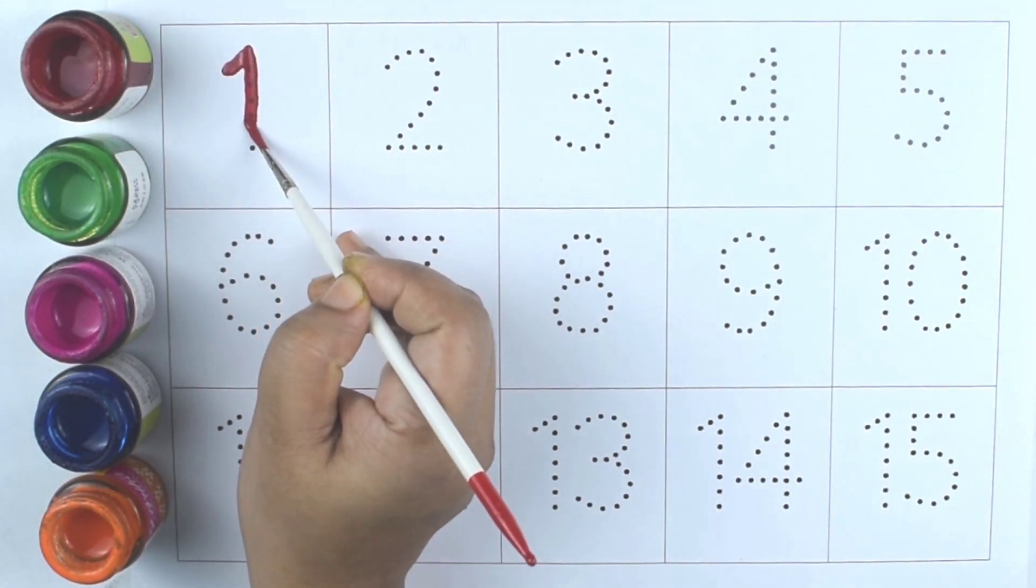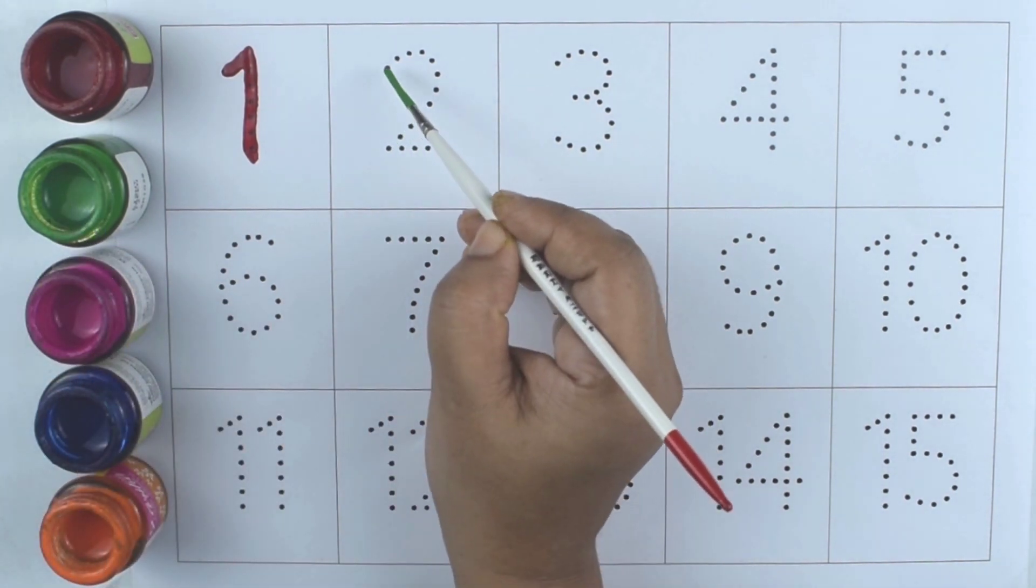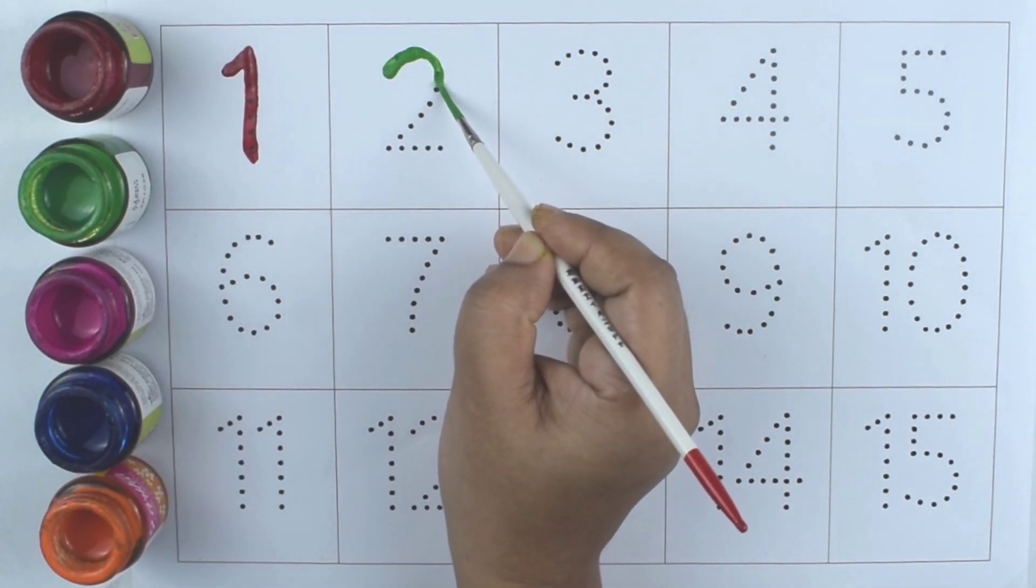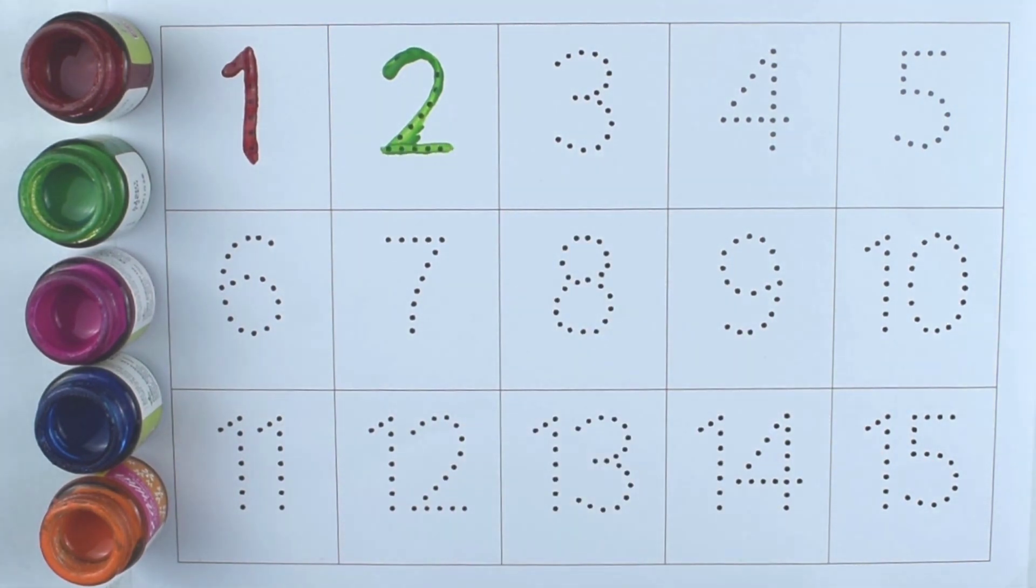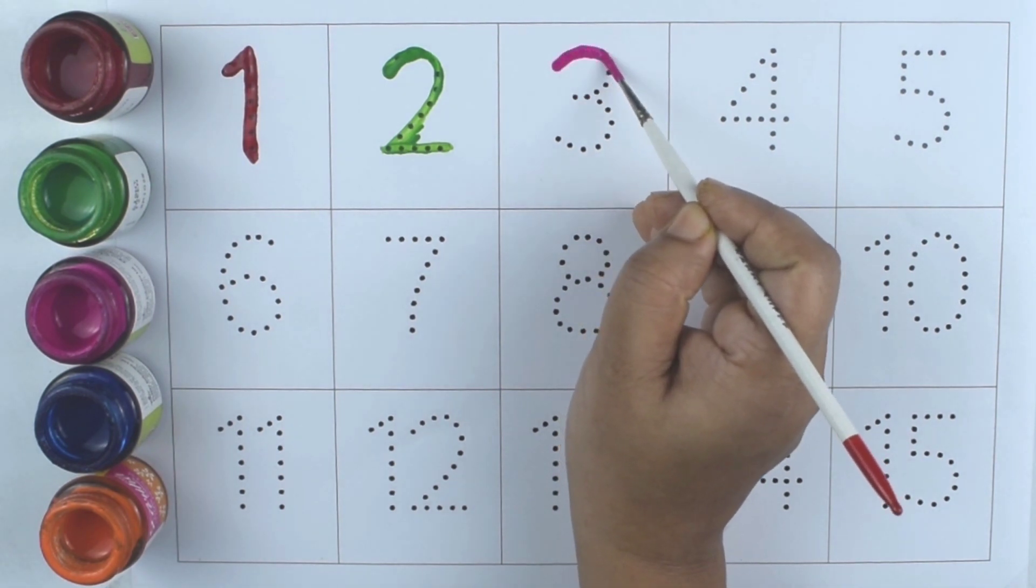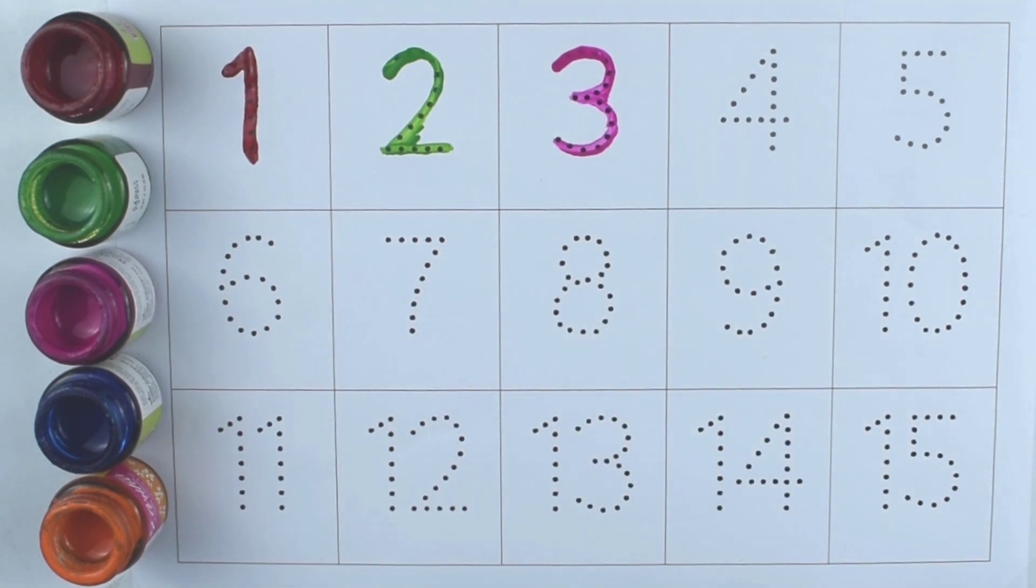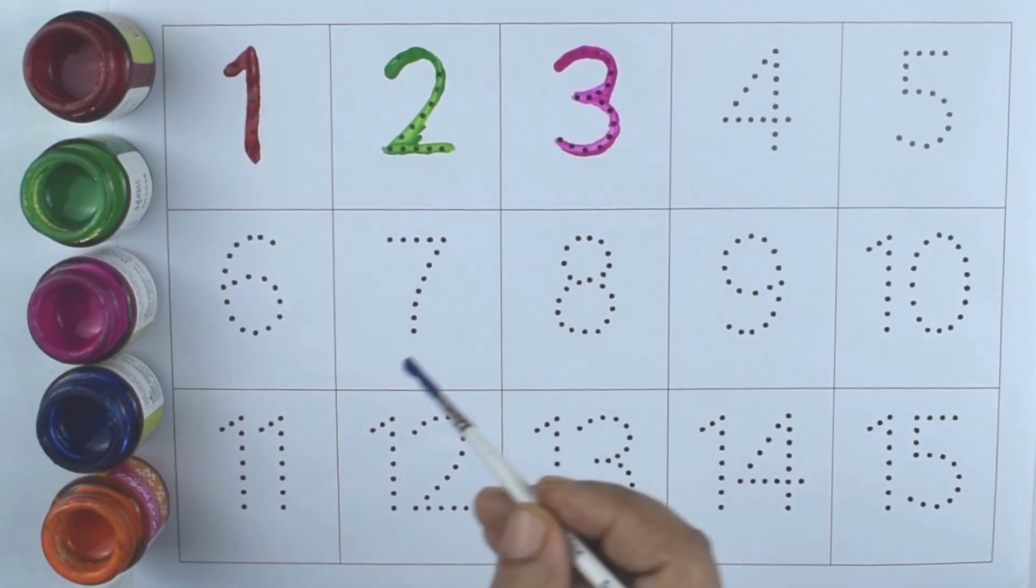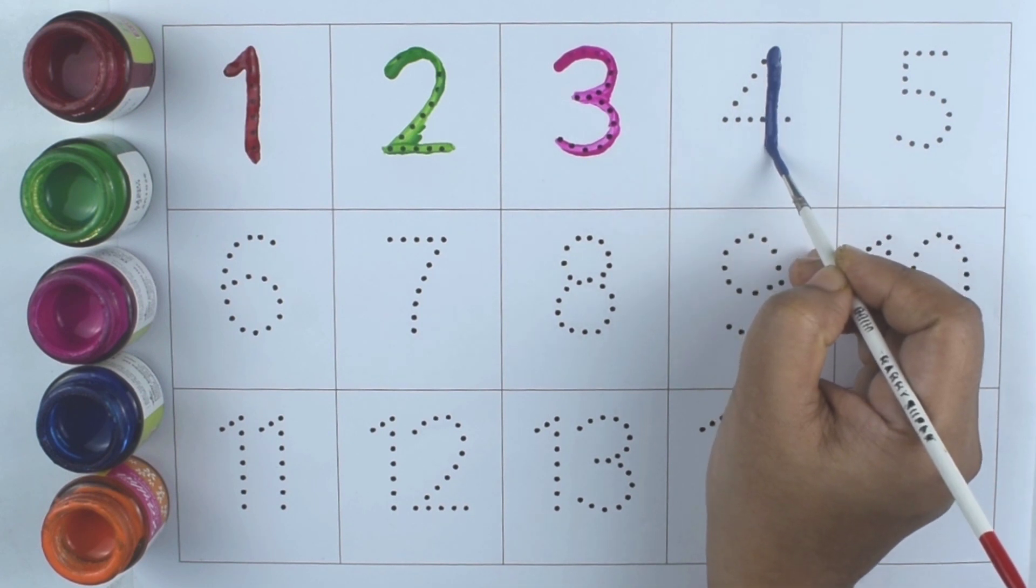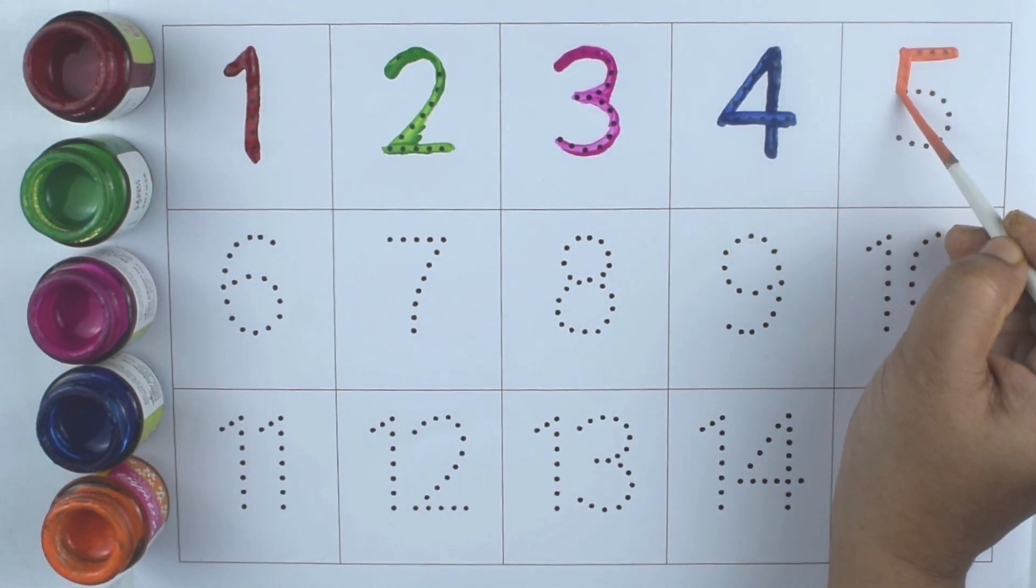One, green color. Two, pink color. Three, blue color. Four, orange color. Five.